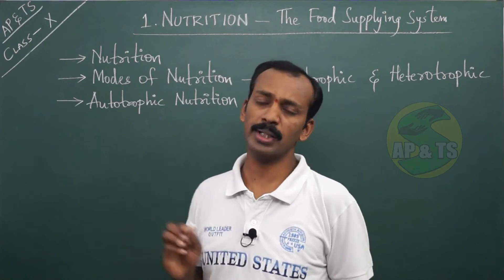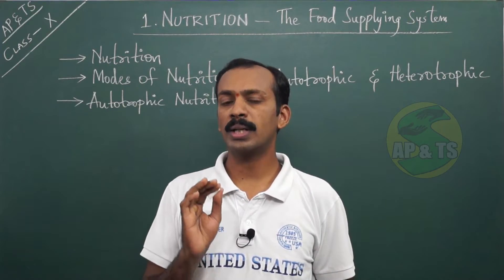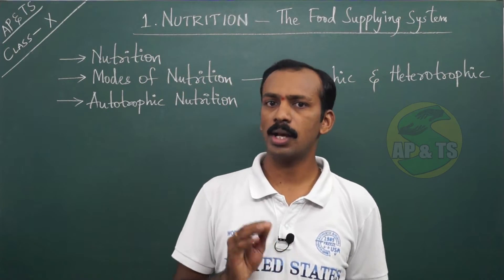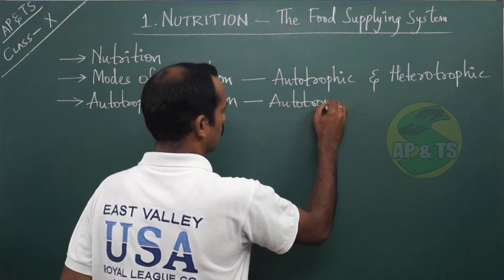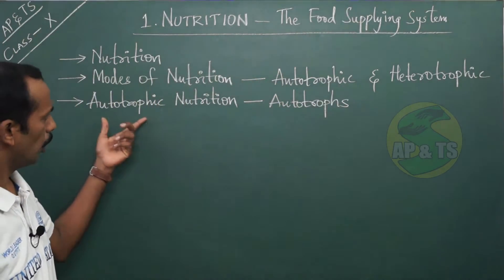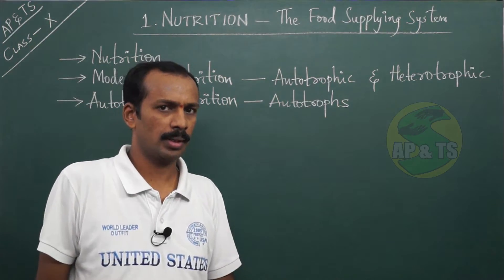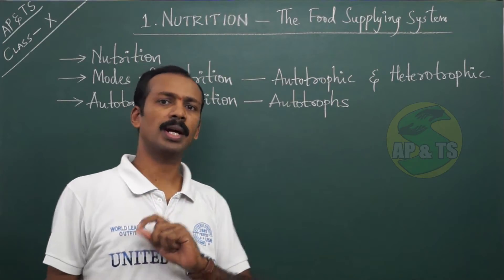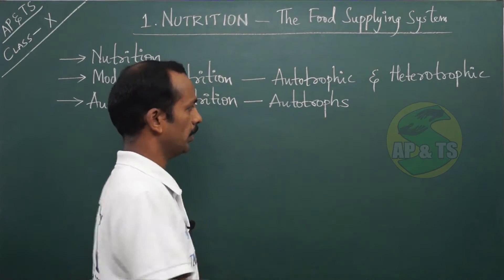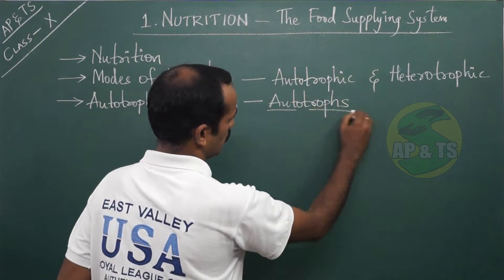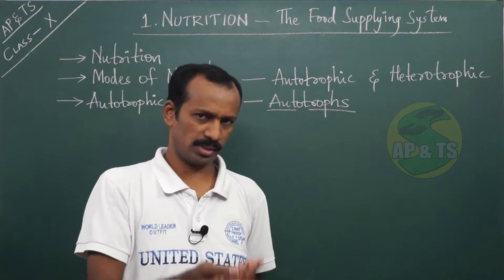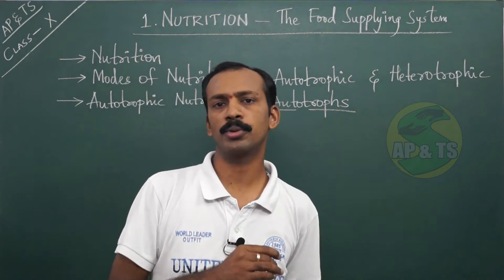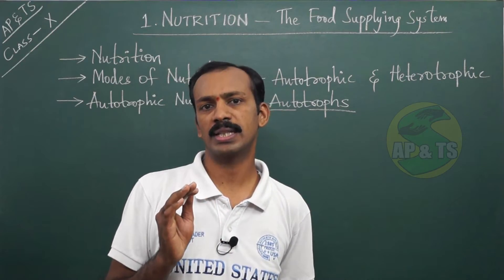The organisms that perform autotrophic nutrition are called autotrophs. Autotrophic nutrition is the type of nutrition, so whoever is performing it, those organisms are called autotrophs. Autotrophs, meaning self-feeding, are those organisms which prepare their own food. Now let us go to the definition of photosynthesis.